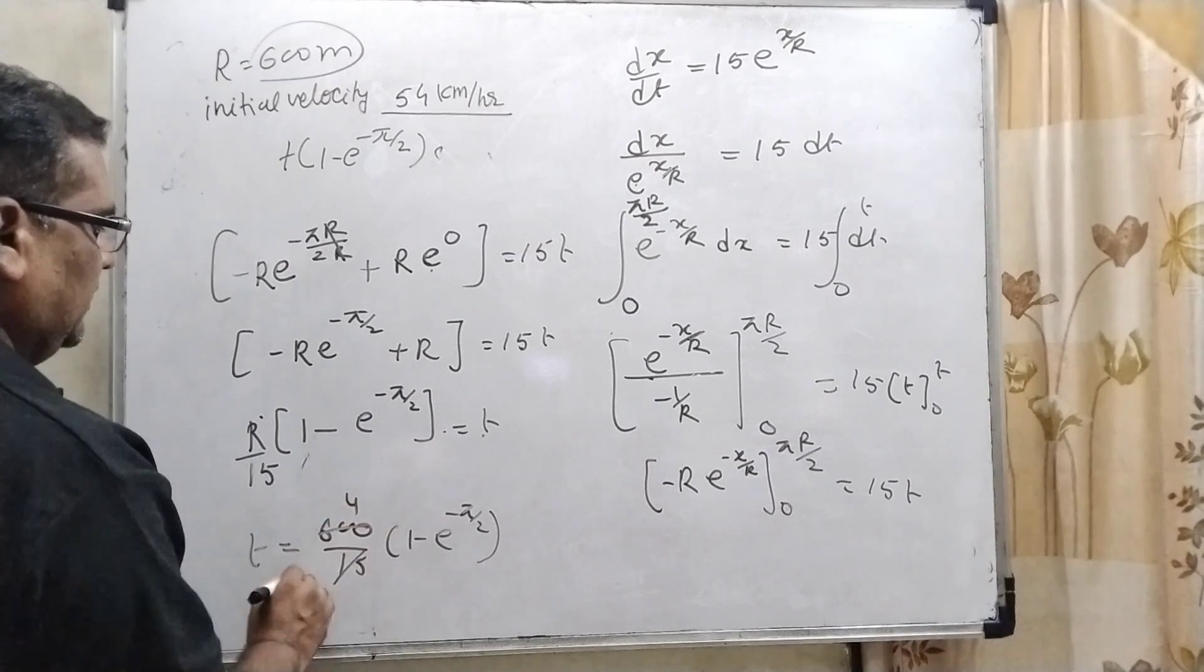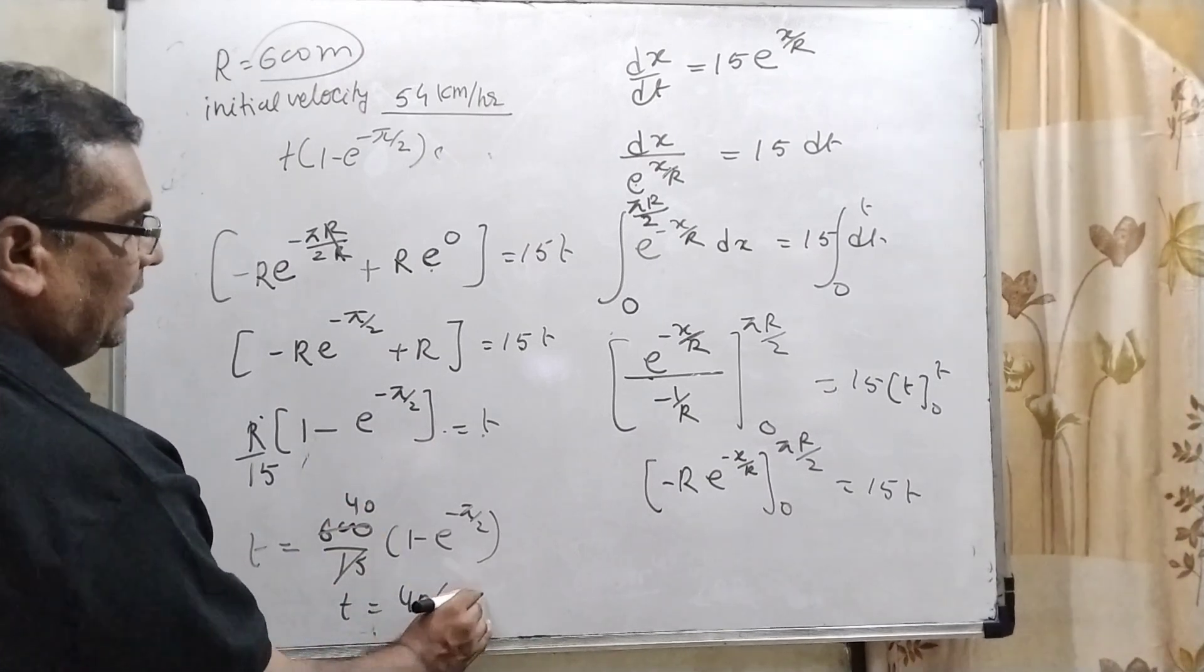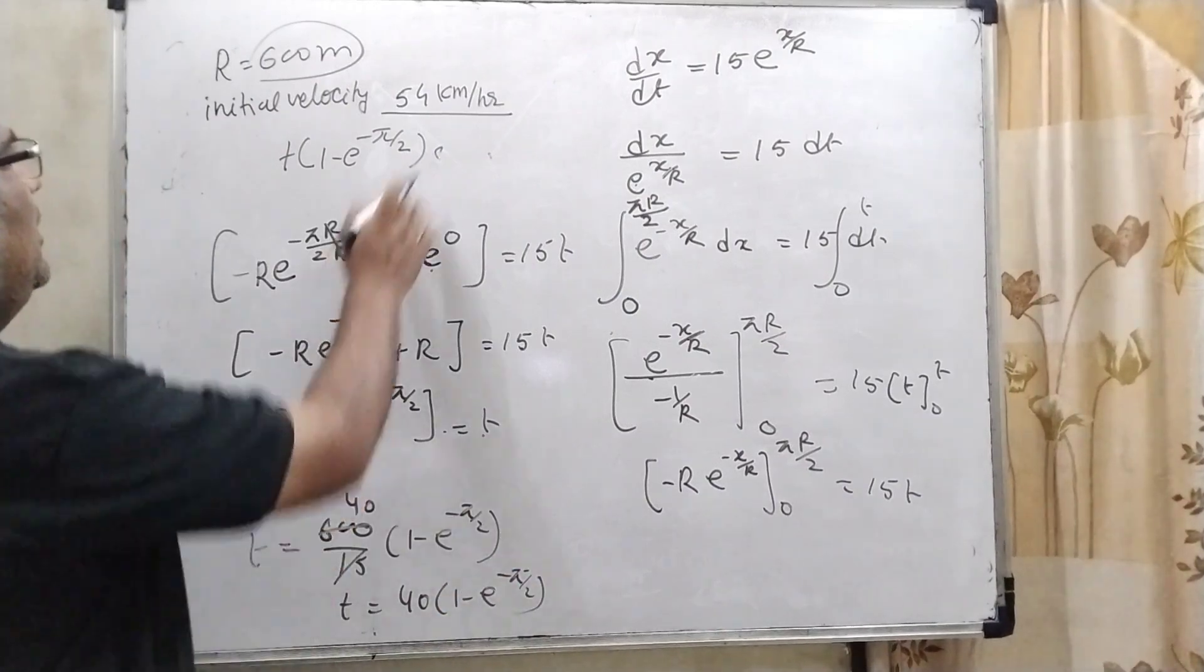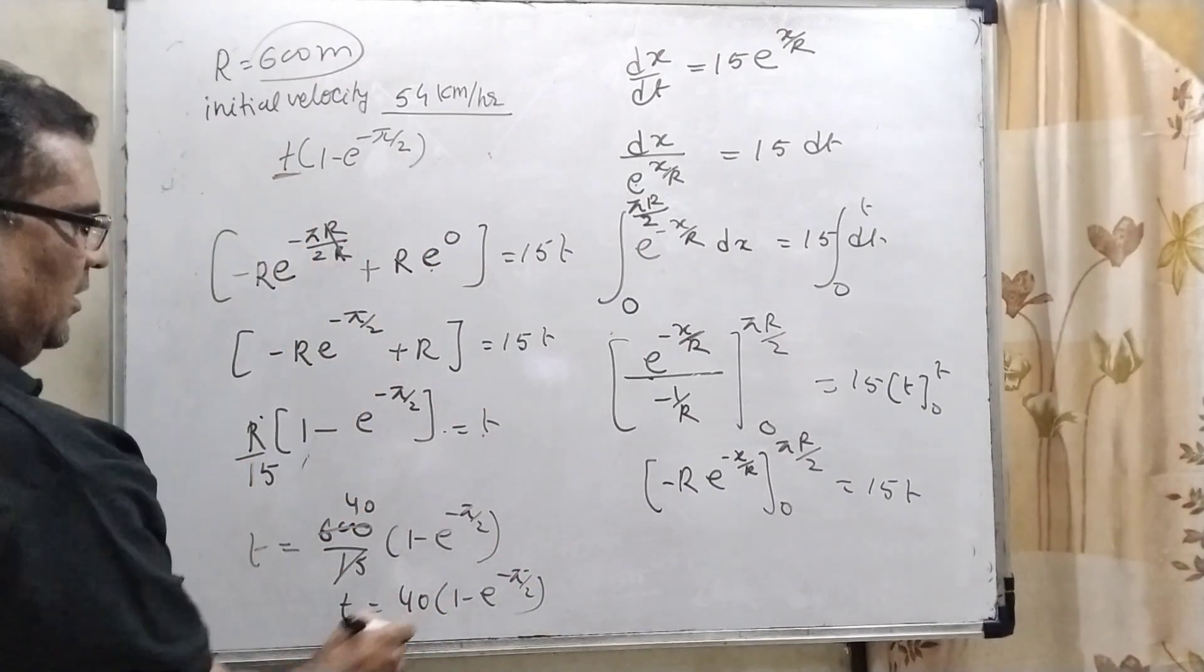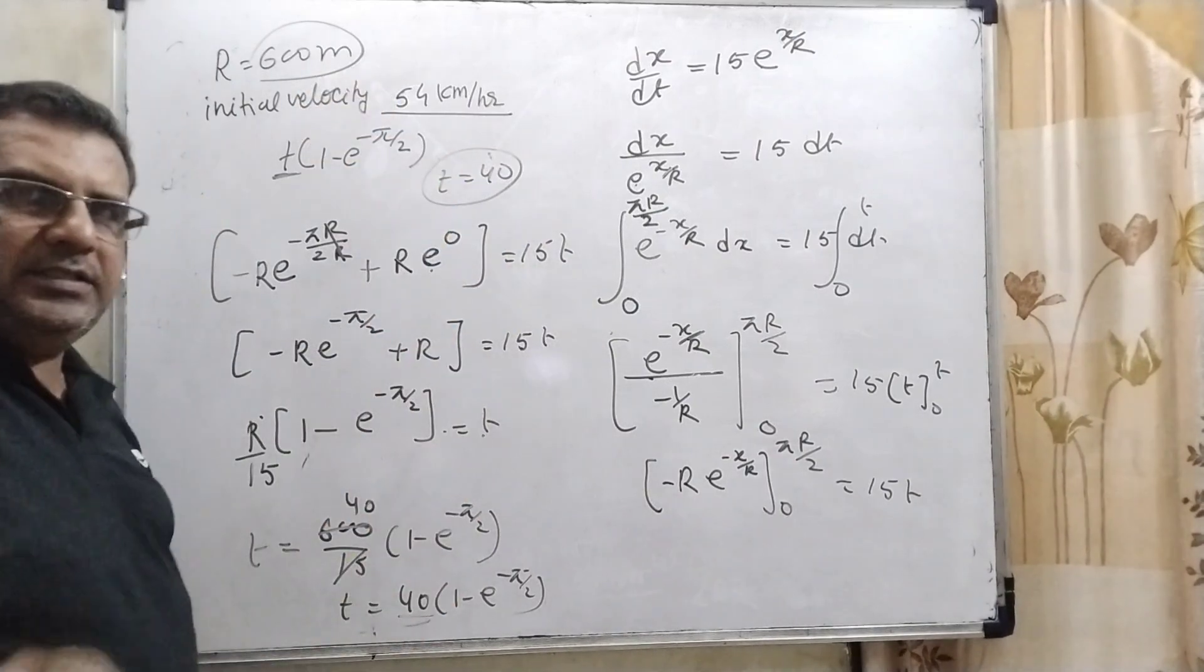600/15 = 40. So t = 40(1 - e^(-π/2)). Therefore, our answer is t = 40.